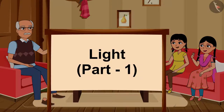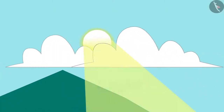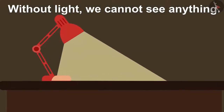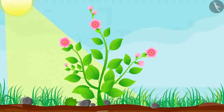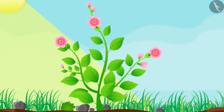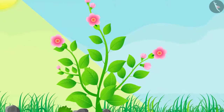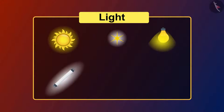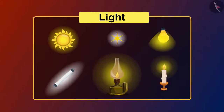Light plays an important role in our lives. Without light we cannot see anything. We have seen in the first part of the video on plants that plants make food in the presence of sunlight. There are many sources of light. Sun and stars are natural sources of light. Bulbs, tube lights, lanterns, candles, etc. are artificial sources of light.